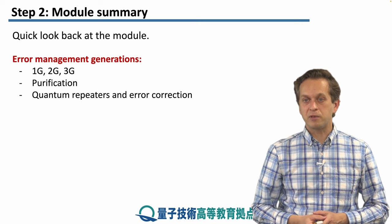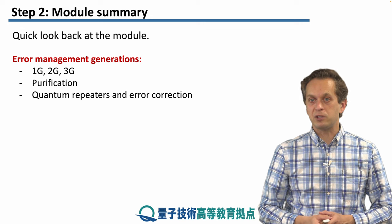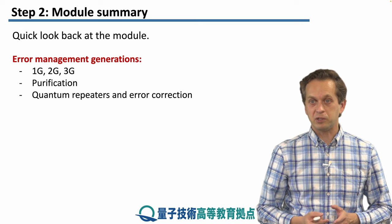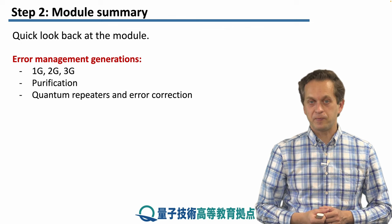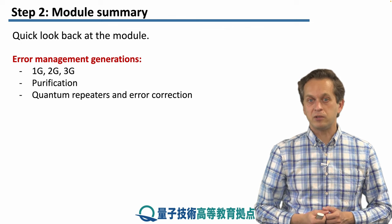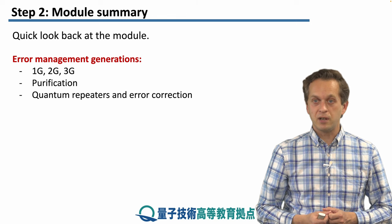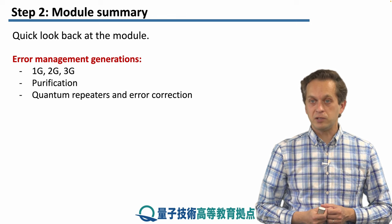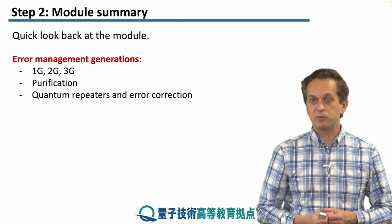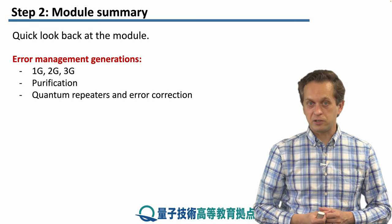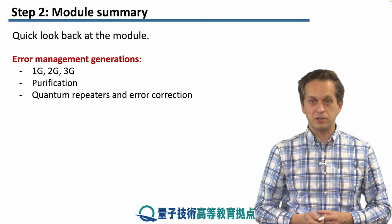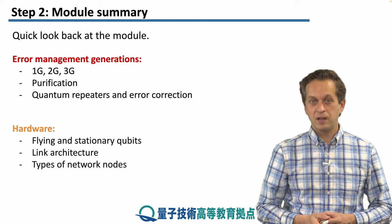We started with three lessons on error management generations of quantum repeaters. We talked about the first, second and third generations and how they are different from each other. And then we concentrated on two ways of managing errors. One is entanglement purification used in the first generation of quantum repeaters. And the second one was quantum error correction used in the second and third generation of quantum repeaters.